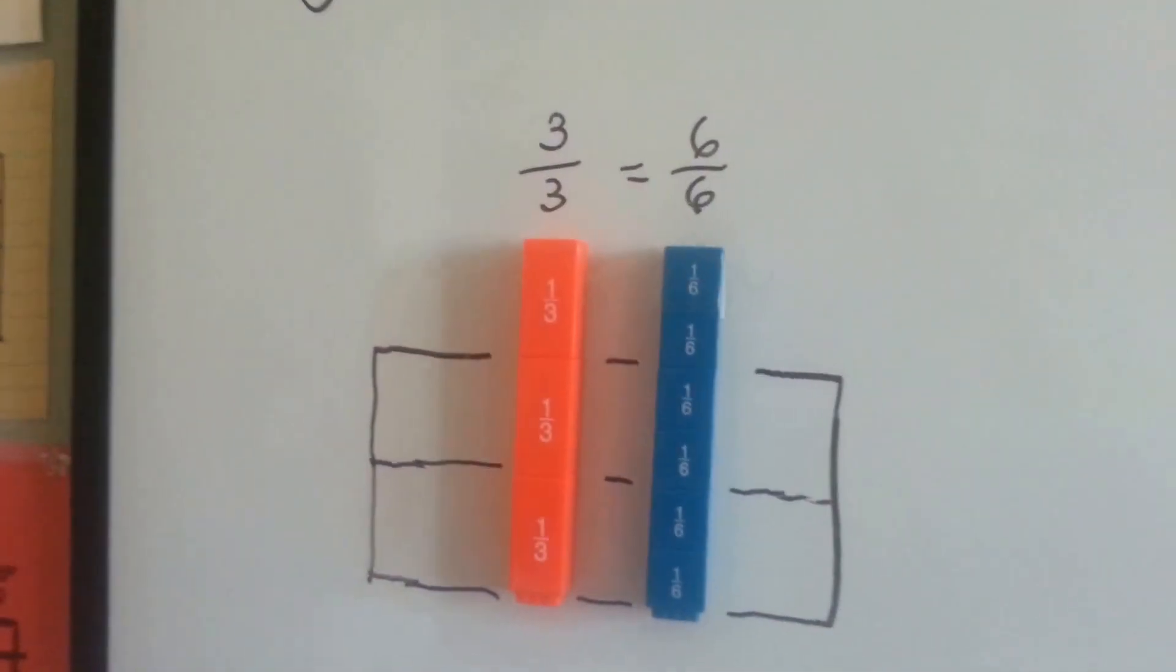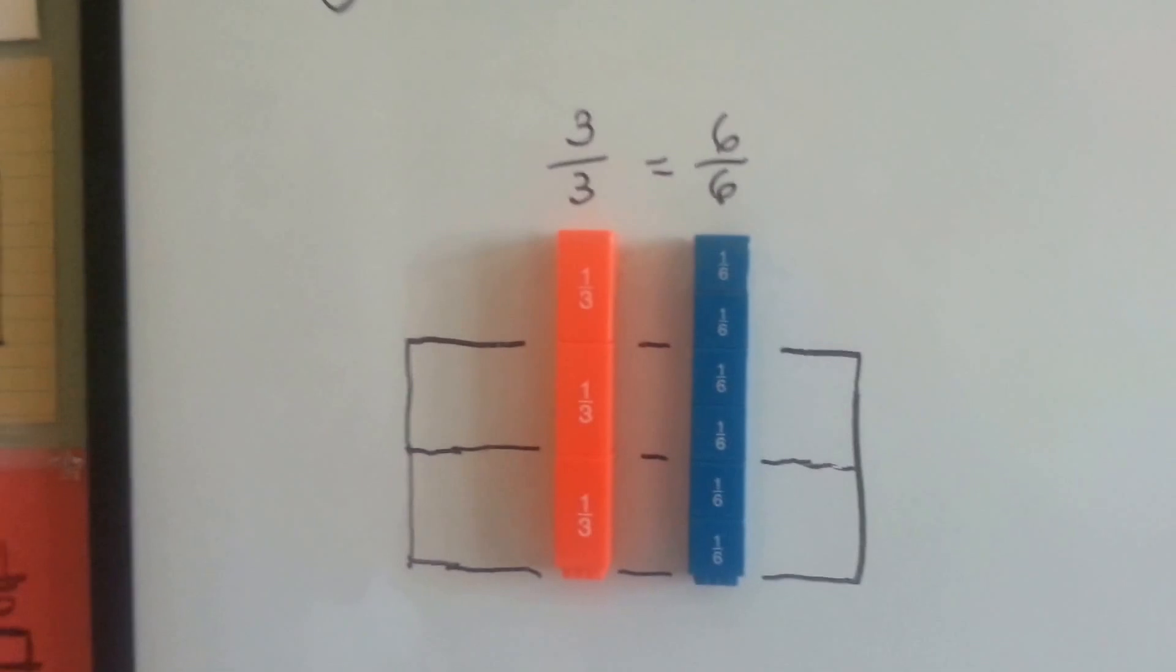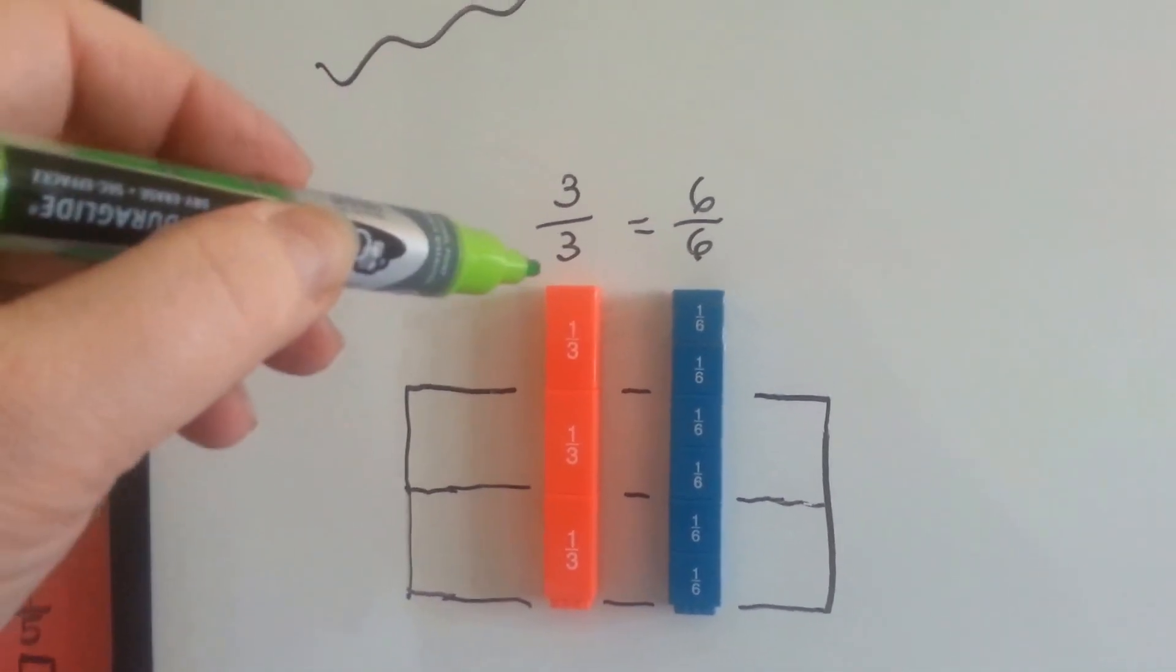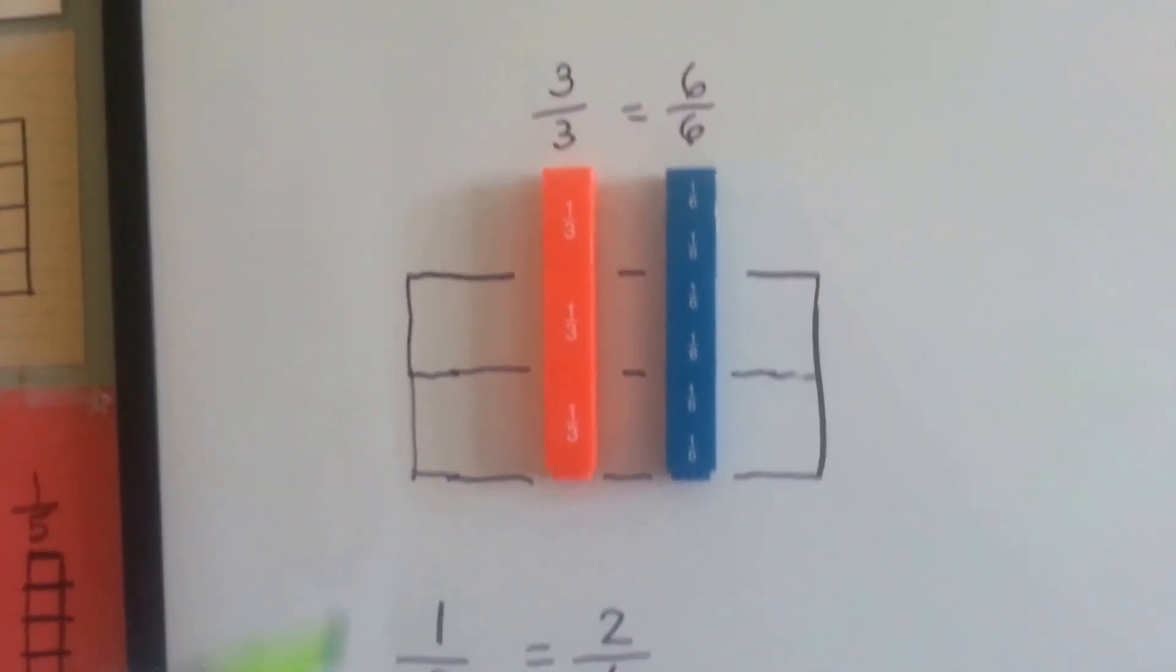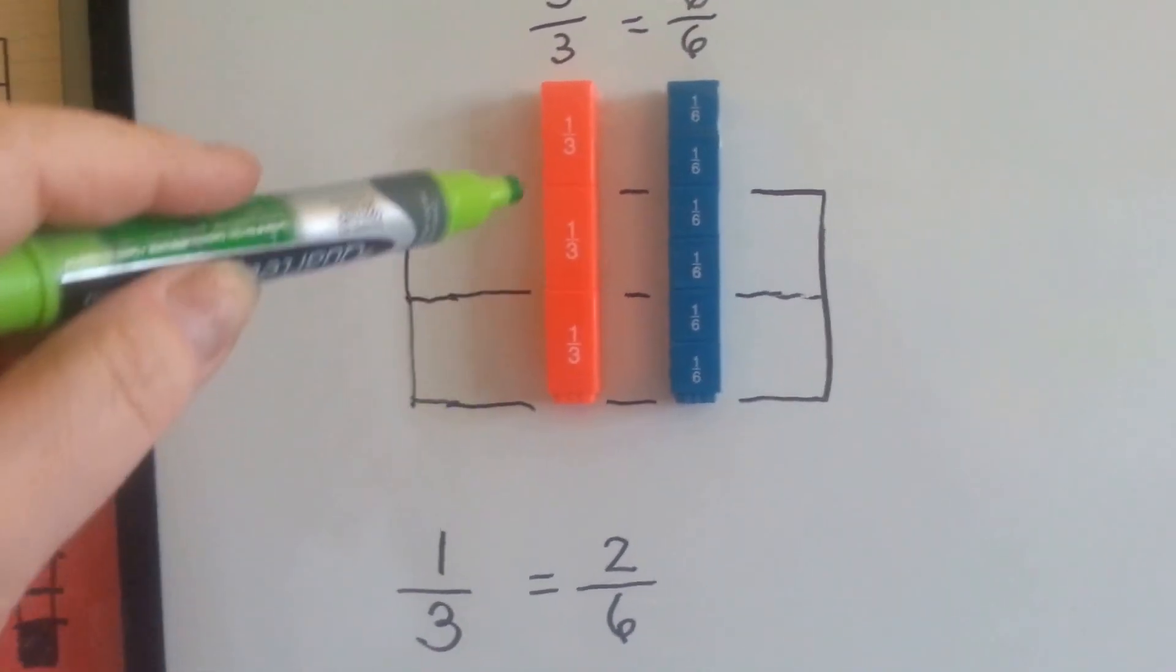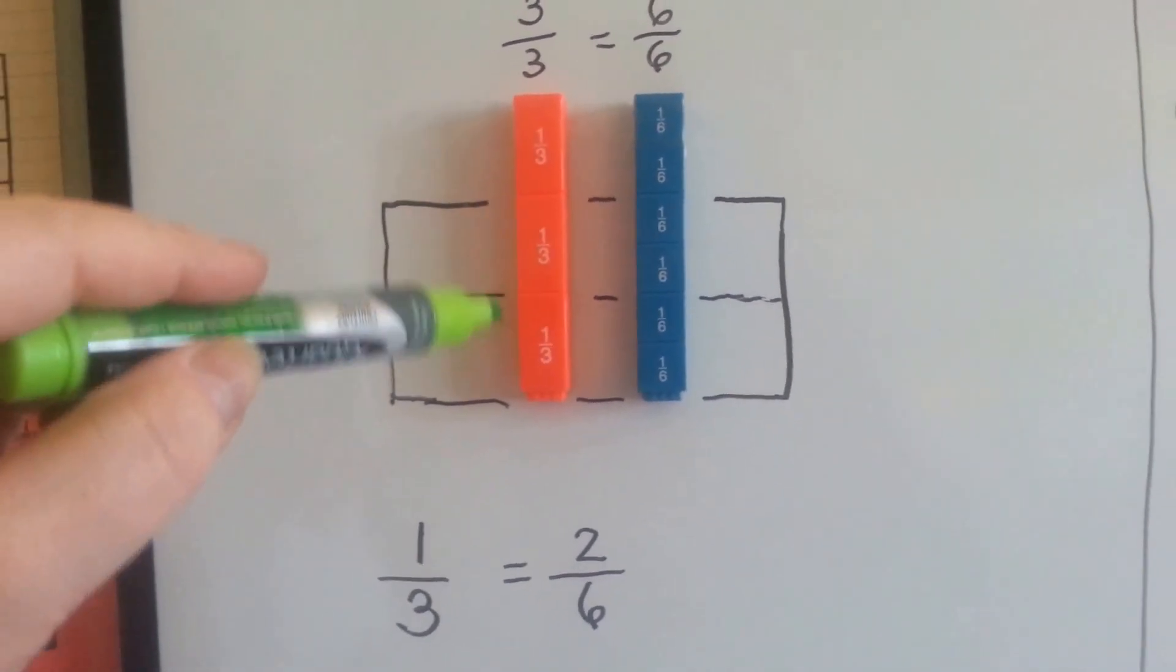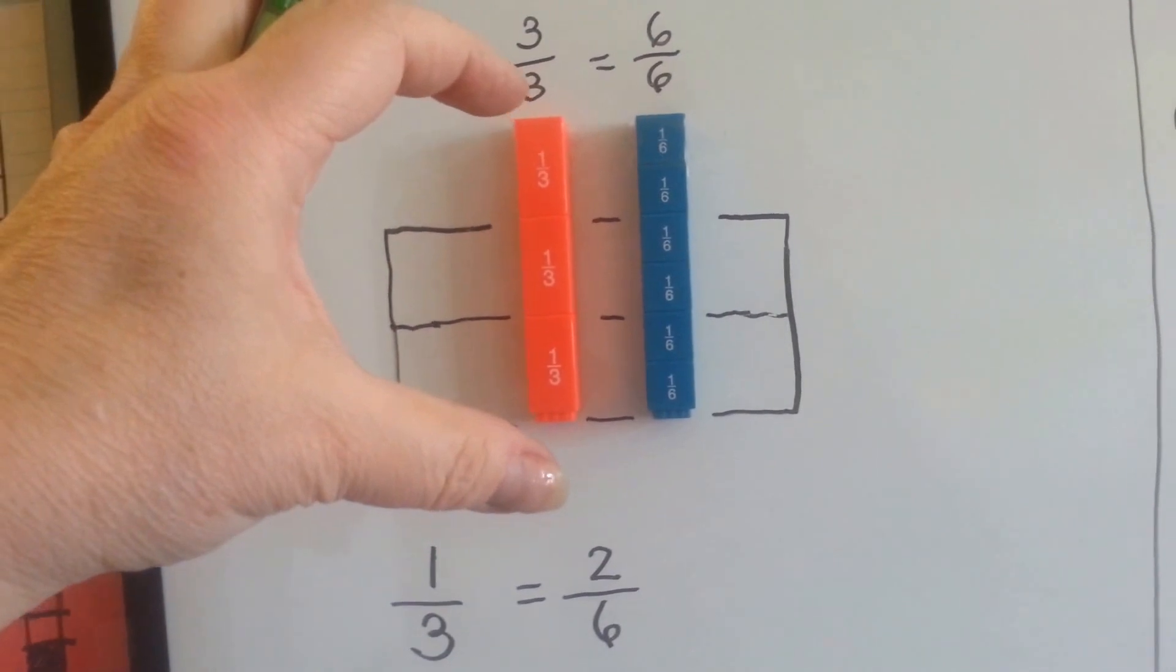As we learned last year in fourth grade, when a numerator is the same as the denominator, it equals 1. We can take fractions like a third and a third and a third, 3 thirds is one whole.